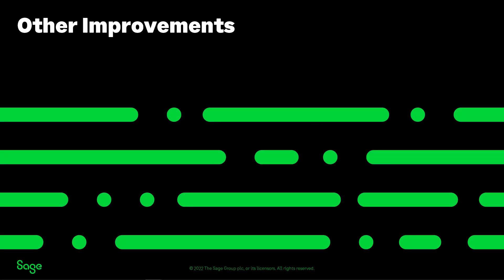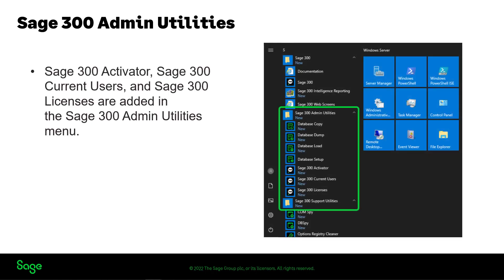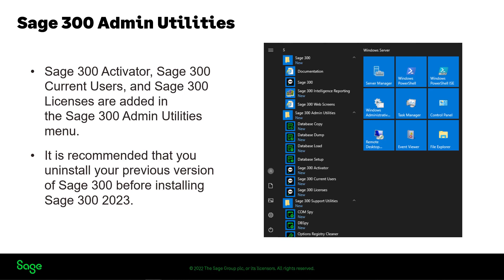This release also includes other improvements. Improvements have been made to the organization of Sage 300 items on the Windows Start Menu so that you can find things more easily. Instead of a single Sage menu, there are now three menus: Sage 300, Sage 300 Admin Utilities, and Sage 300 Support Utilities. New items have been added in the Sage 300 Admin Utilities menu so that you can use features like Data Activation, Current Users, and License Manager without needing to open Sage 300. To get the best experience with the improved start menu, uninstall your previous version of Sage 300 before installing Sage 300 2023. If you don't do this, the start menu will show both the old menu and the new menus.